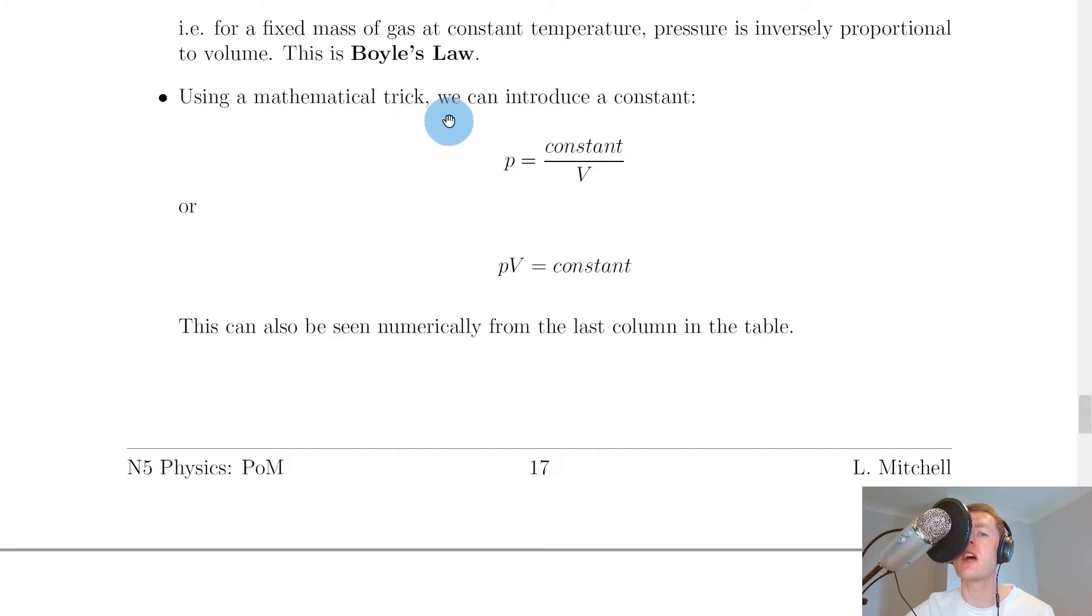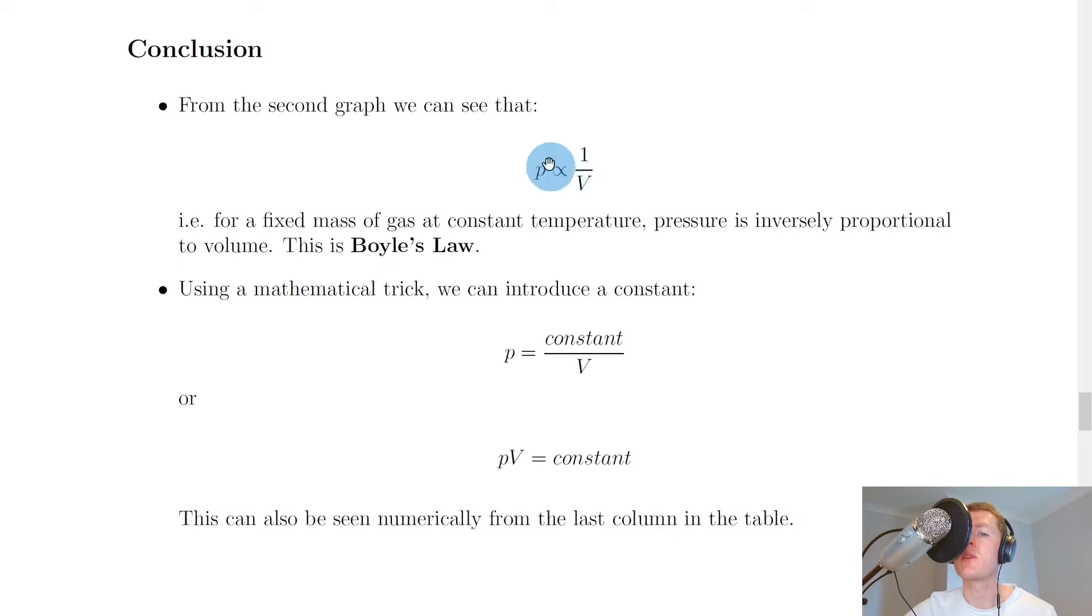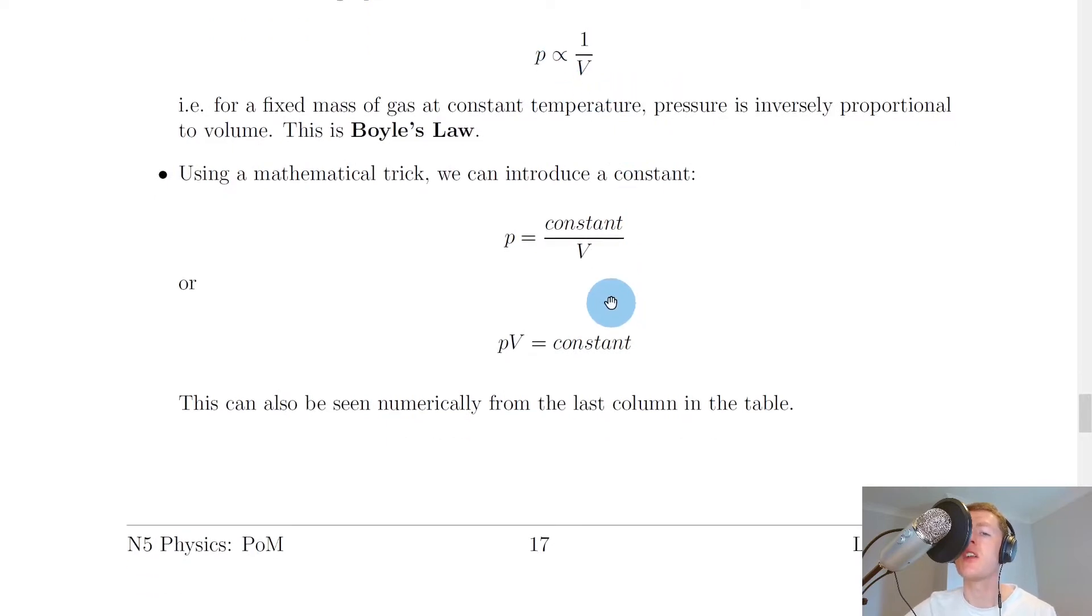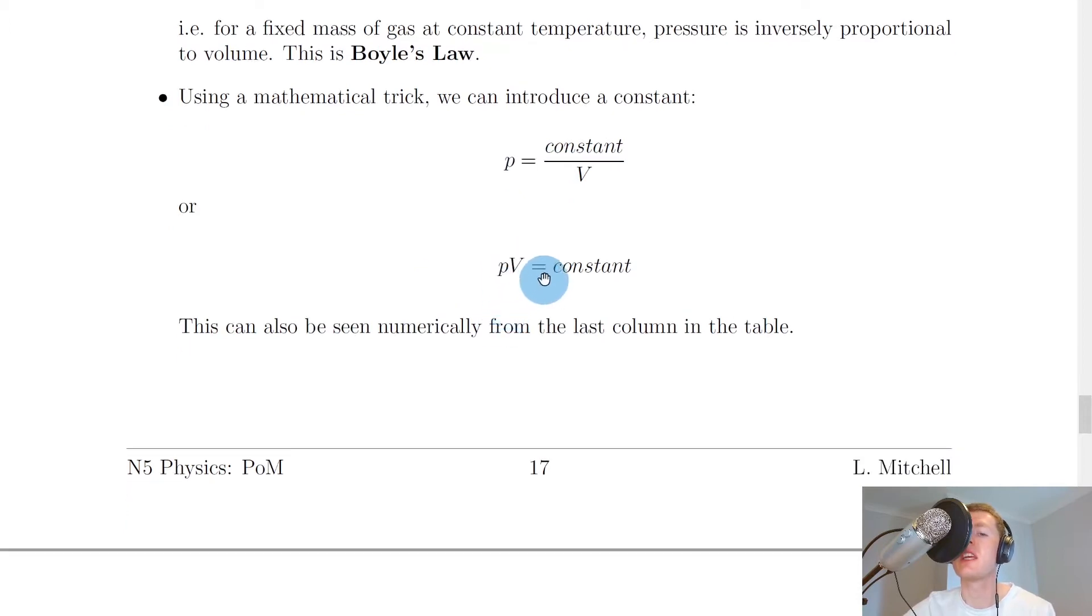Using a mathematical trick we can introduce a constant. Whenever we have something with the directly proportional sign, to get rid of that and replace it with an equal sign we need to multiply everything on the right hand side by a constant. So we'll get P equals 1 over V times a constant, or P equals constant divided by V. If we want to get the constant on its own on the right hand side, we can cross multiply to get the volume up to the left hand side. So we end up with P times V equals a constant.